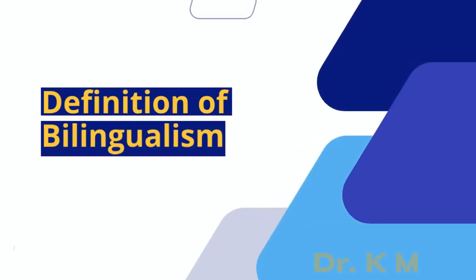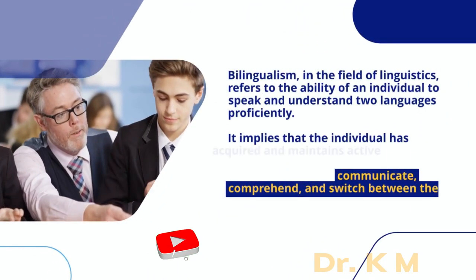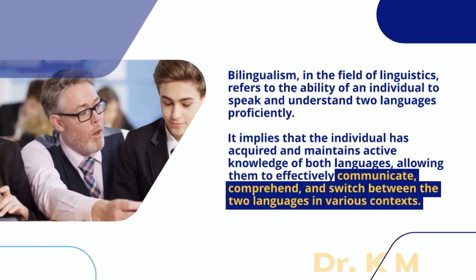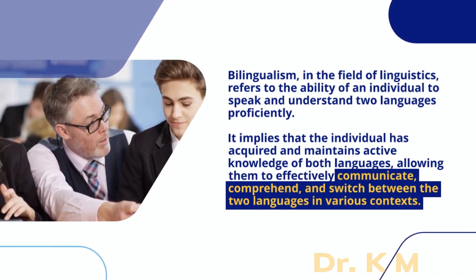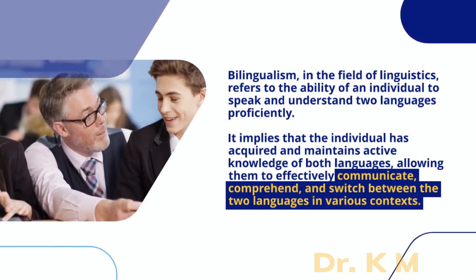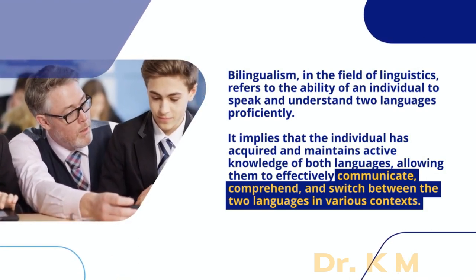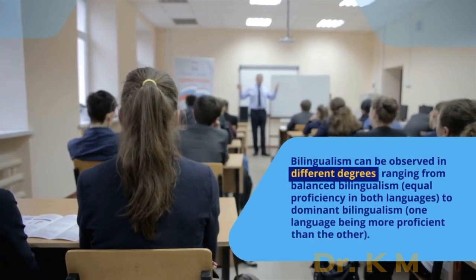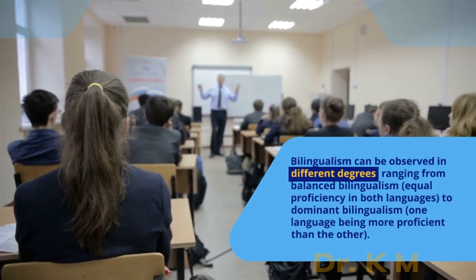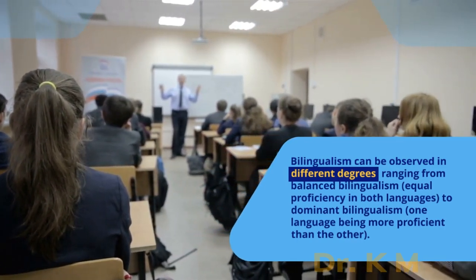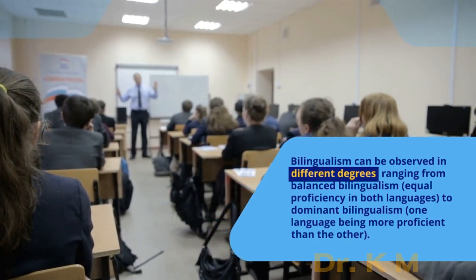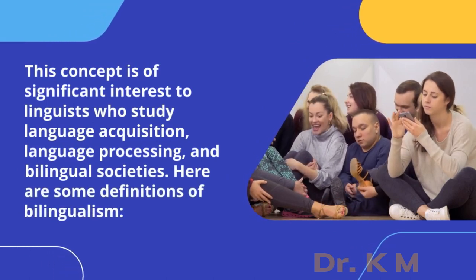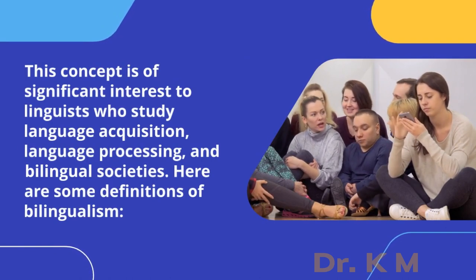Bilingualism, in the field of linguistics, refers to the ability of an individual to speak and understand two languages proficiently. It implies that the individual has acquired and maintains active knowledge of both languages, allowing them to effectively communicate, comprehend, and switch between the two languages in various contexts. Bilingualism can be observed in different degrees, ranging from balanced bilingualism — equal proficiency in both languages — to dominant bilingualism, where one language is more proficient than the other. This concept is of significant interest to linguists who study language acquisition, language processing, and bilingual societies.